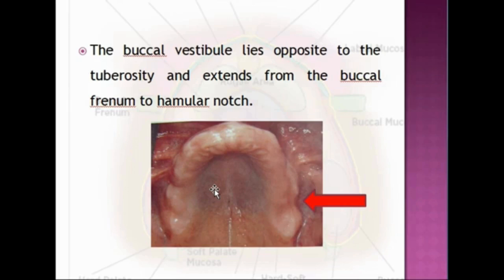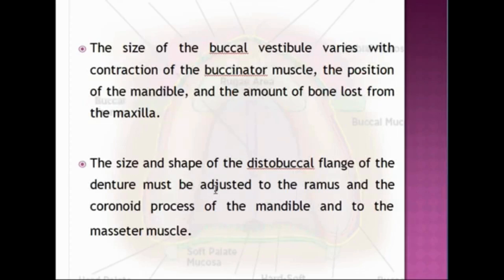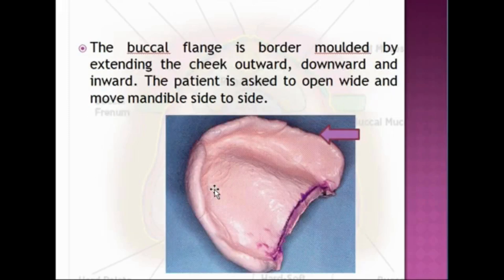The size and shape of the disto-buccal flange of the denture must be adjusted to the ramus and coronoid process of the mandible and to the masseter muscle. The buccal flange is border molded by extending the cheek outward, downward, and inward; the patient is asked to open wide and move the mandible side to side. The clinical significance of this region involves the origin of the zygomatic process of the maxilla.